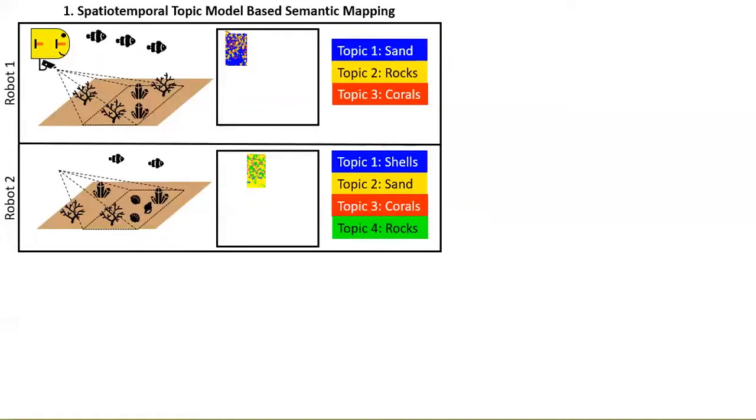We developed a system to solve for consistent topic matches online. Each robot uses a spatiotemporal topic model-based semantic mapping system to learn topics that represent its own observations, and uses these to build its own local semantic map.